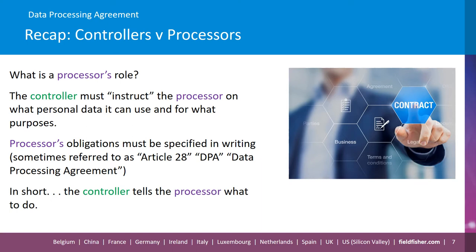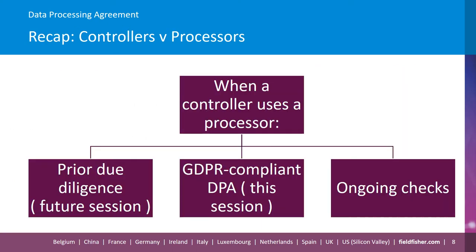The controller tells the processor what to do. So when a controller uses a processor, they must carry out prior due diligence — we'll deal with this in a future session. They must put in place a GDPR compliant DPA, which we're talking about in this session. And throughout the relationship, they must continue to carry out ongoing checks on the processor for use of their personal data and to check they're complying with their instructions.